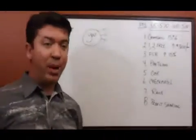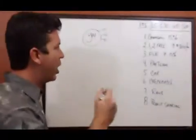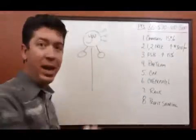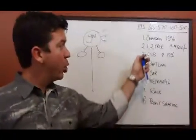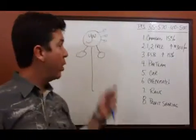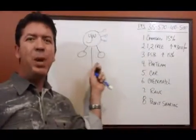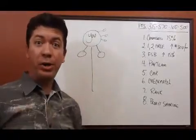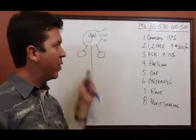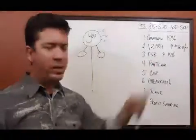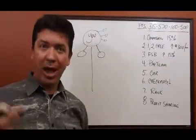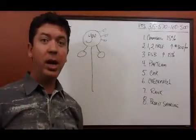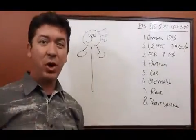The third way we get paid happens when we begin to sign on promoters. As we're beginning to build teams and we sign on promoters, we can earn a fast start bonus on any products that any promoter, not customer, but any promoter purchases within their first 28 days. There could be a lot of money made here. It's up to 15% commission. We'll show you how to get that, but you can earn that on any one that you personally enroll. That's called a fast start bonus.